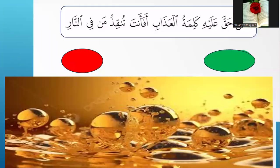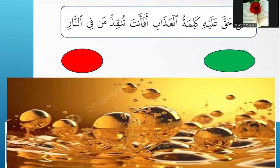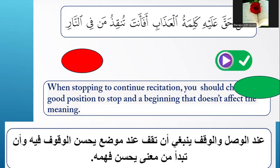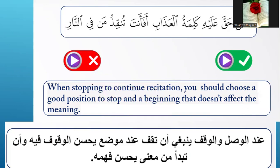Application — please look at the ayah. When stopping to continue recitation, you should choose a good position to stop and a beginning that doesn't affect the meaning. The correct stop is: Afaman haqq alayhi kalimatul al-Azabi, afa ansa tunuqidhu man kin jaraqq. But the wrong stop is stopping at 'afa ans' — don't stop there, as the meaning is not complete.